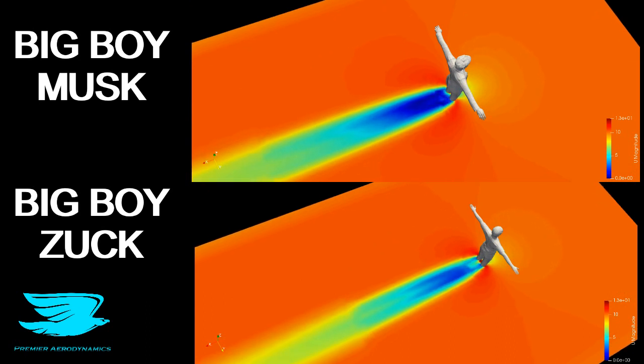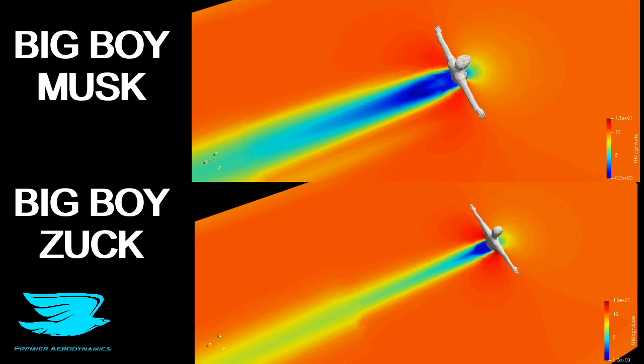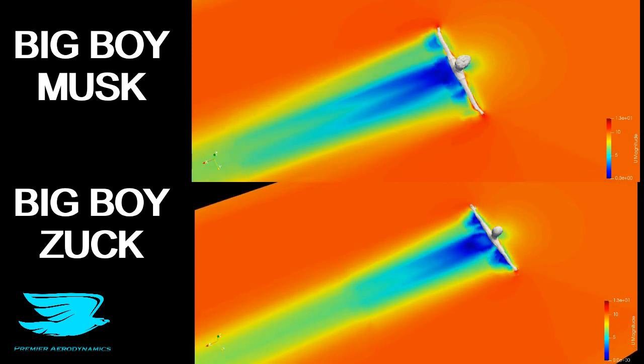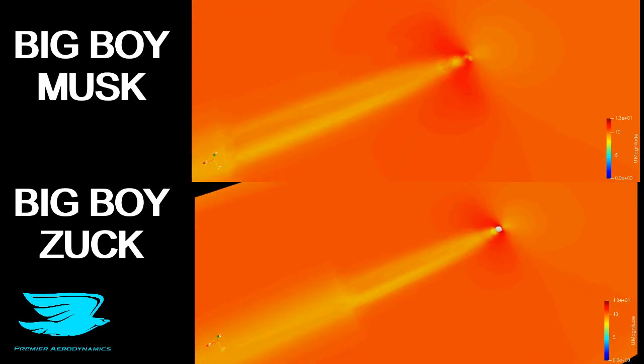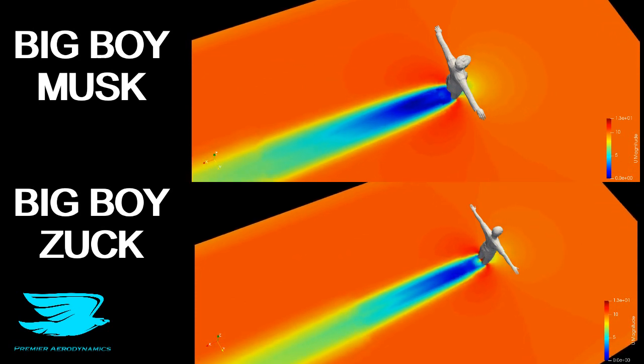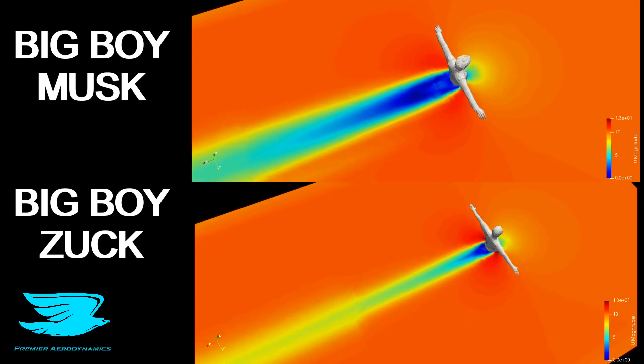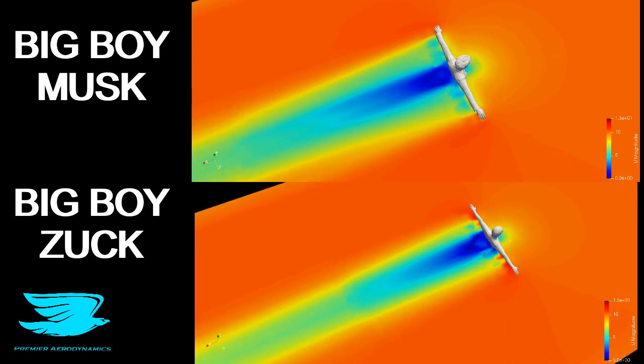The drag coefficient of Musk is 0.61, whereas the drag coefficient of Zuckerberg is 0.47. So Zuckerberg is actually less draggy than Musk, but Musk produces more lift. If we calculate their efficiency—the lift-to-drag ratio—Musk actually comes out ahead at 0.33, whereas Zuck's only got about zero. That's pretty good for Musk in terms of his SpaceX idea.